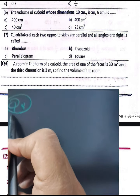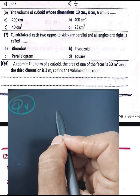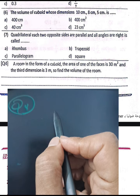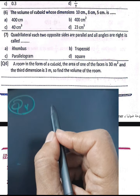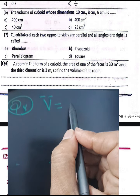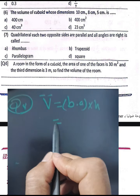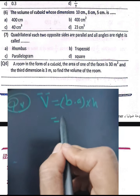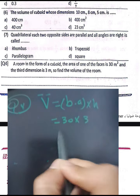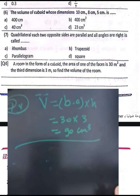Problem number four: a room in the form of a cuboid has a base area of 30 square meters and a height of 3 meters. Find the volume. The volume of a cuboid equals base area times corresponding height: 30 times 3 equals 90 cubic meters.